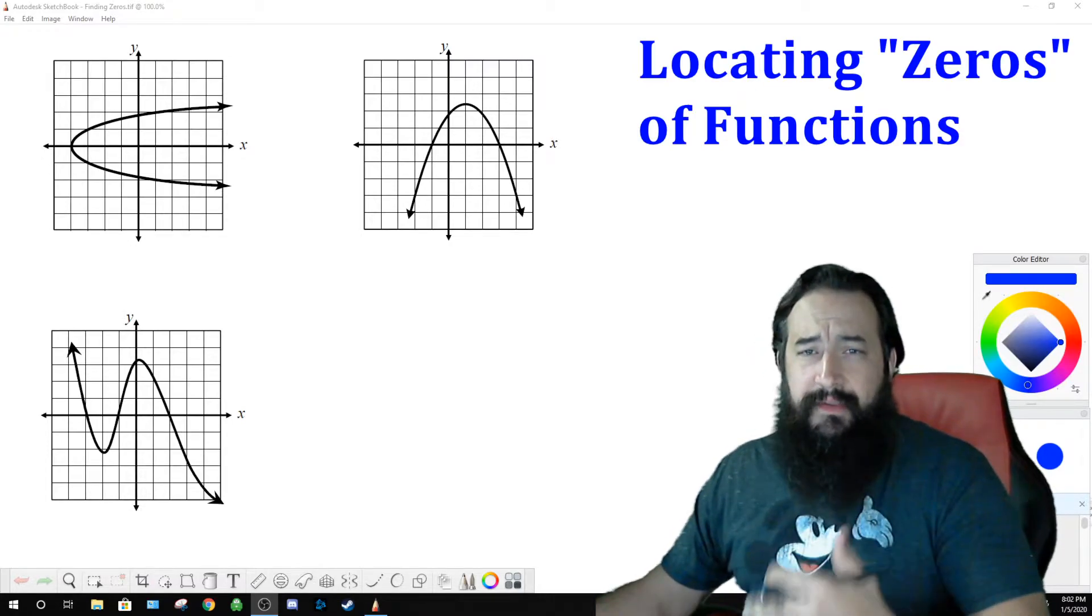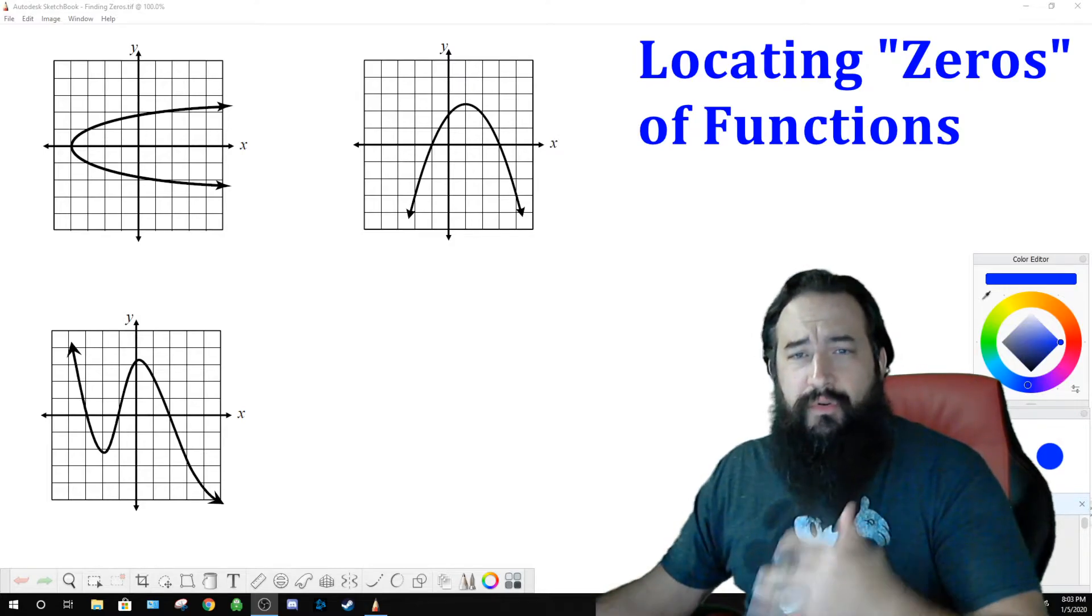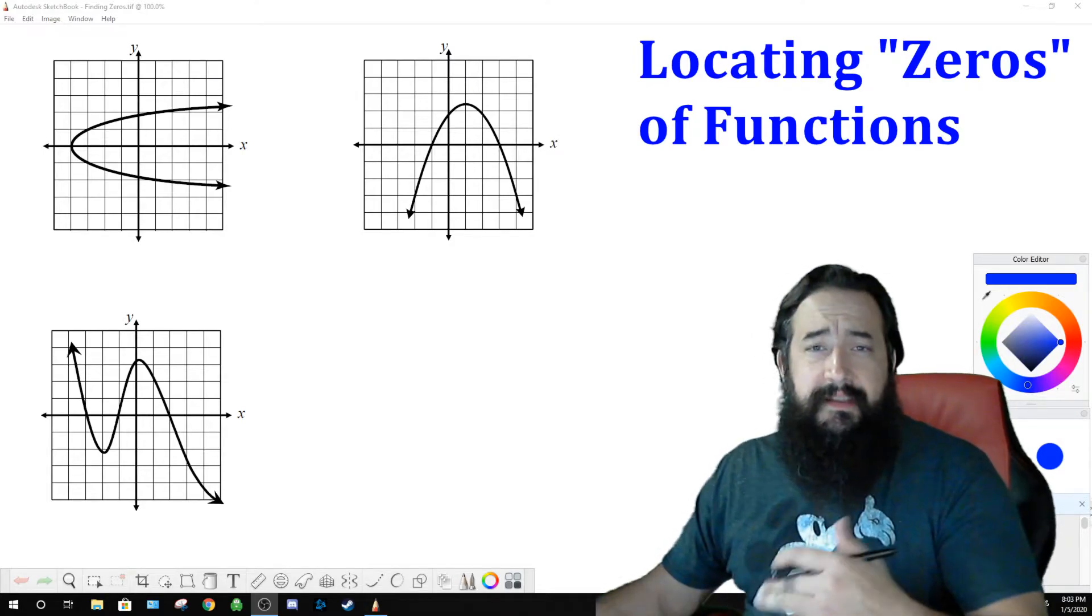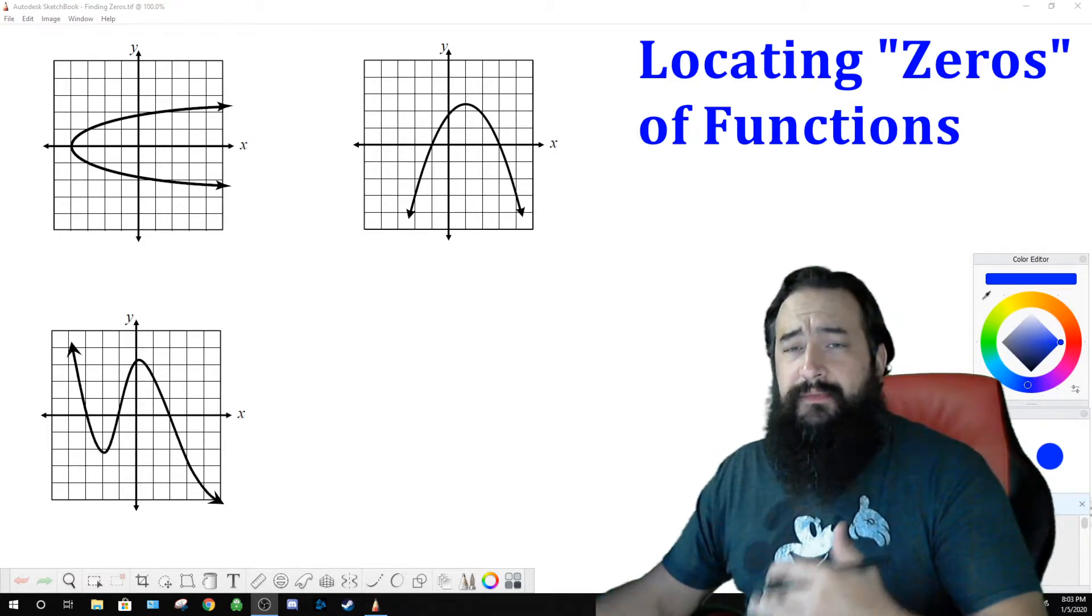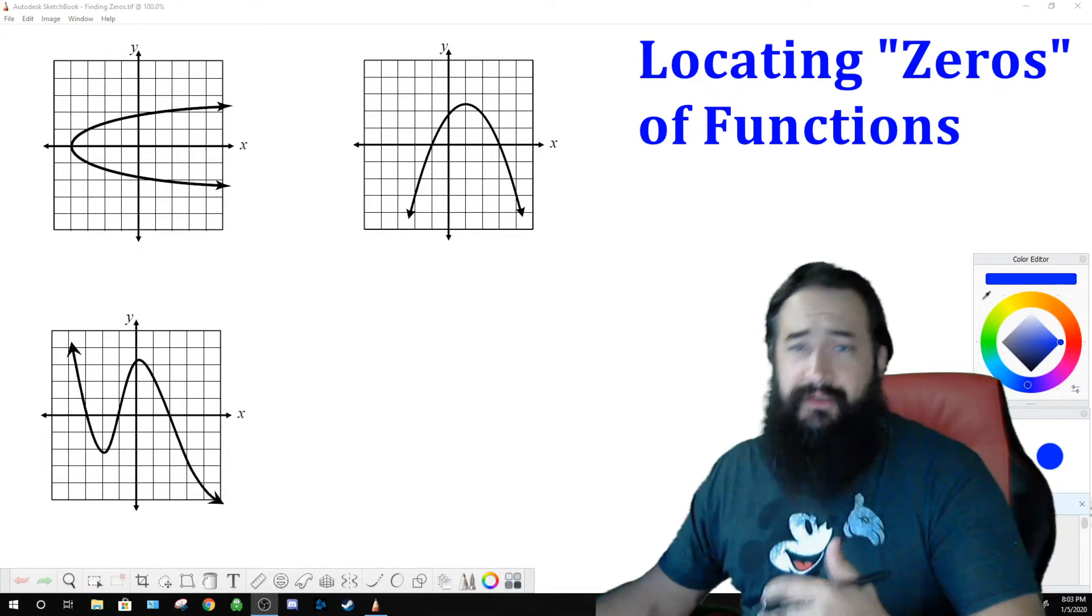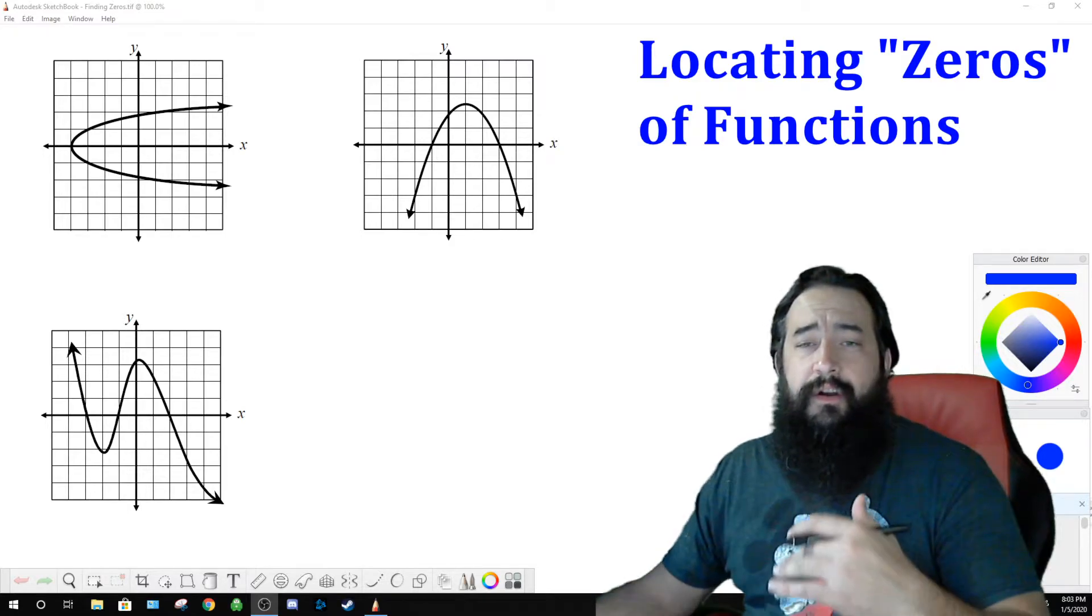So, what a zero is on a graph is where the graph of a function crosses the x-axis. Or I should say a graph of a relation, because it doesn't actually have to be a function to have a zero. A zero is where a graph crosses the x-axis. It is an x-value. Solutions to equations or functions or relations are x-values.